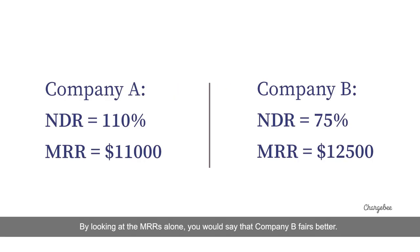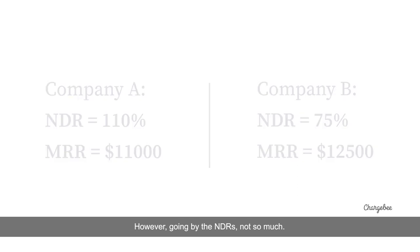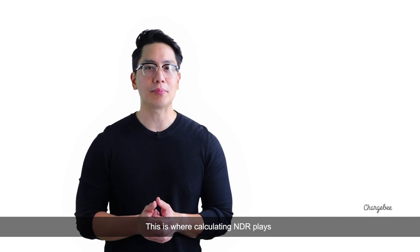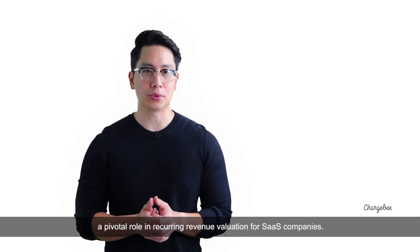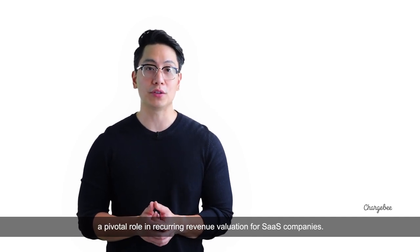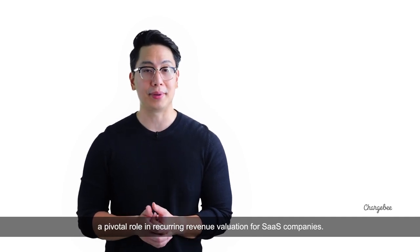By looking at the MRRs alone, you would say that Company B fares better. However, going by the NDRs, it's not so much. This is where calculating NDR plays a pivotal role in recurring revenue valuation for SaaS companies.